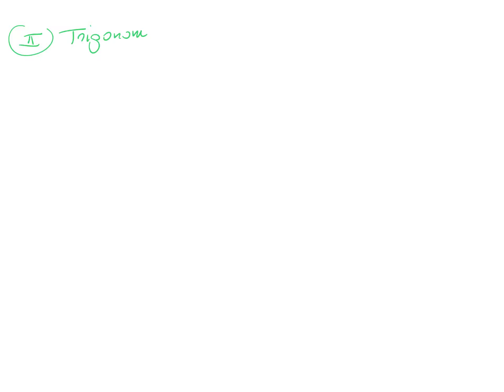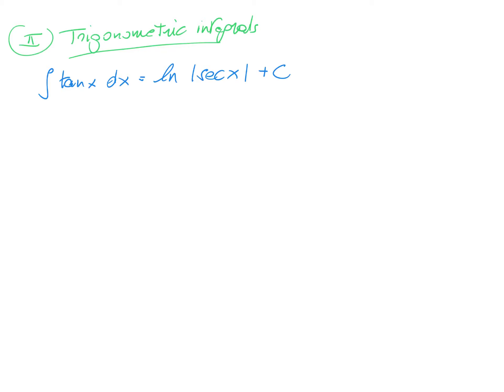For the second part, let's take a look at trigonometric integrals. The first integral, which is not as obvious as the ones we saw before, is the integral of the tangent. The integral of tangent x dx is the logarithm of the secant, so ln of the absolute value of secant of x plus a constant.